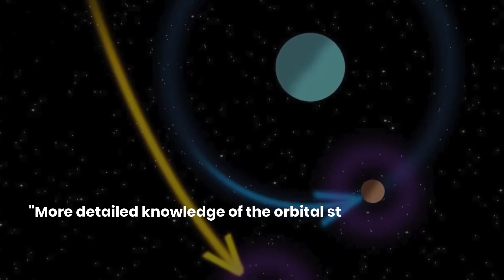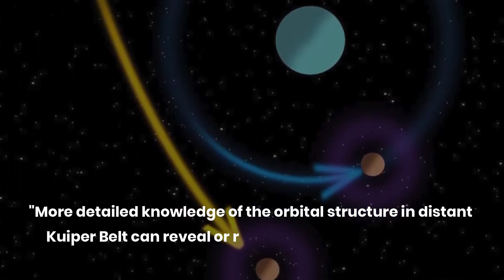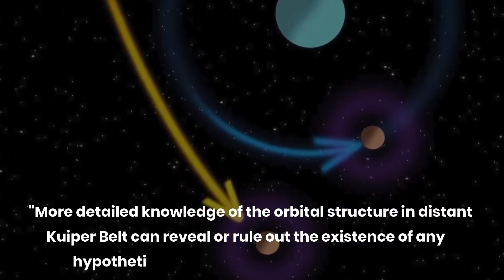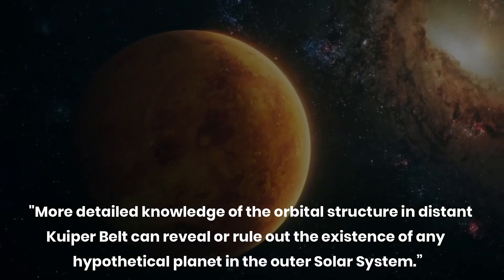More detailed knowledge of the orbital structure in the distant Kuiper Belt can reveal or rule out the existence of any hypothetical planet in the outer solar system.